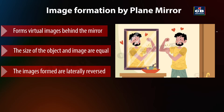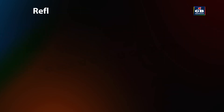The images formed by plane mirrors are laterally reversed, also known as left-right reversed. This means that if you raise your right hand in front of a plane mirror, your image will appear to raise its left hand.